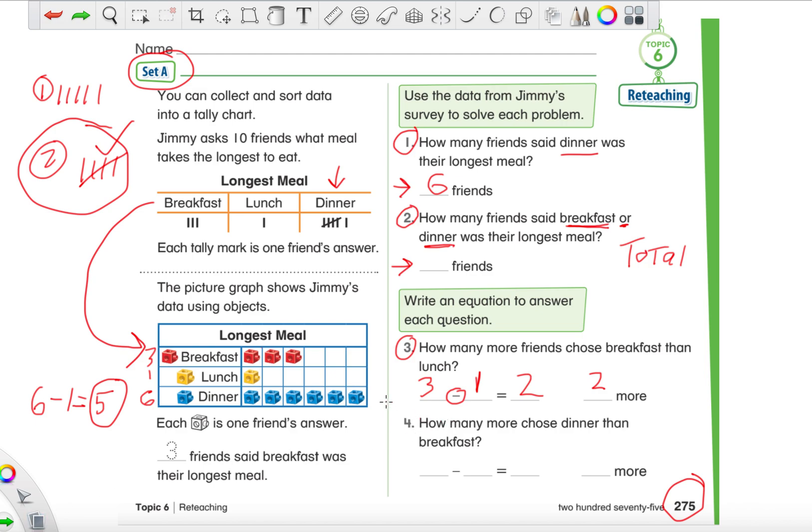Now number 4, I will not give you guys the answer, so make sure that you try it. Try your hardest to do it the best you can because I am collecting these workbooks. So number 4 says, how many more chose dinner than breakfast? So now you're comparing the red cubes and the blue cubes. Go ahead and try that one, I'll give you guys a few moments. If you're still working on number 4, pause the video, take your time as always. If not, let's move on to page 276 next.